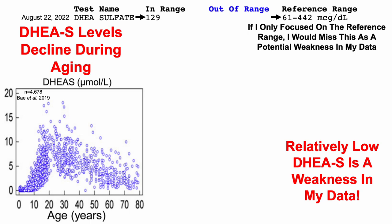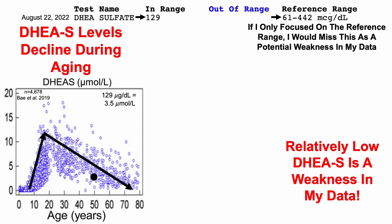Why is that? First, DHEA sulfate levels decline during aging. They increase up until about 20 years of age, and afterwards they decline up to 80 years old on this plot. When showing my most recent data of 129 micrograms per deciliter, which is 3.5 micromolar, we can see that I'm low for my chronological age. But potentially more importantly, I have two data points from my early 30s, and when plotting that data, we can see that I was once relatively high, and now I'm relatively lower.